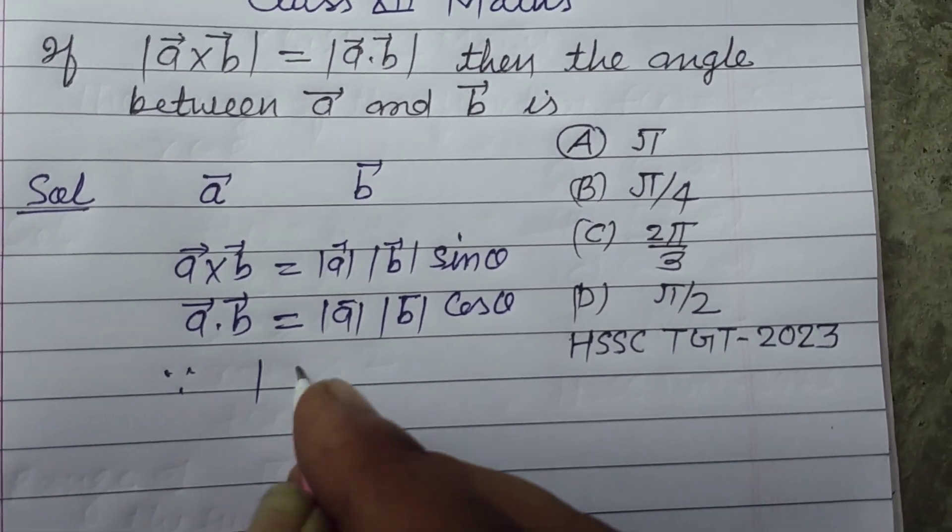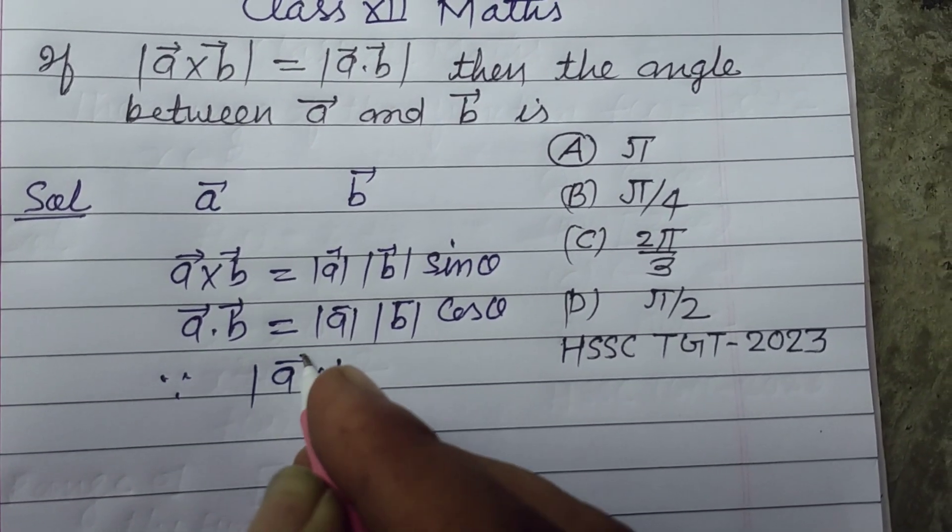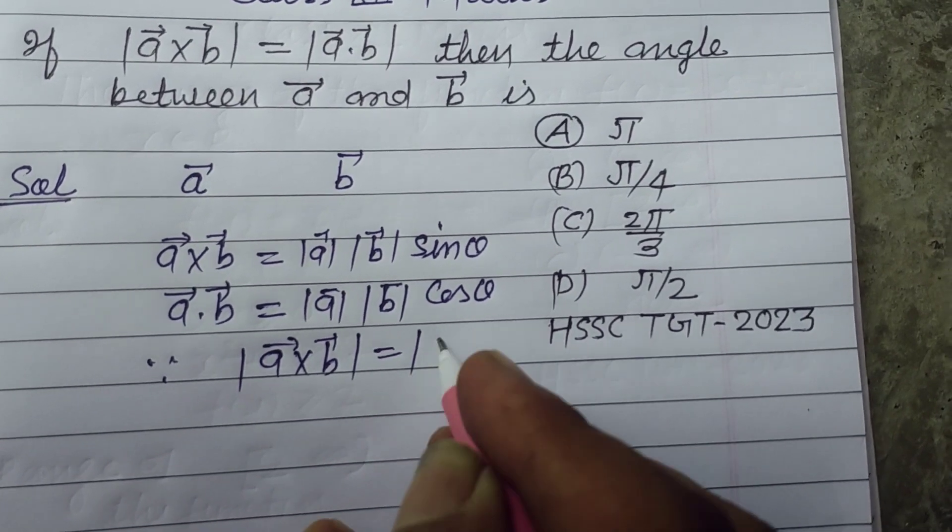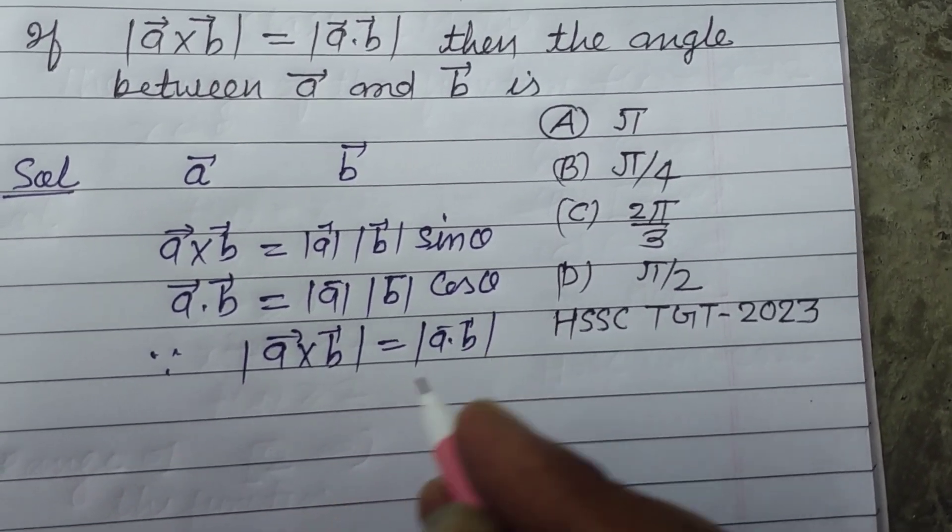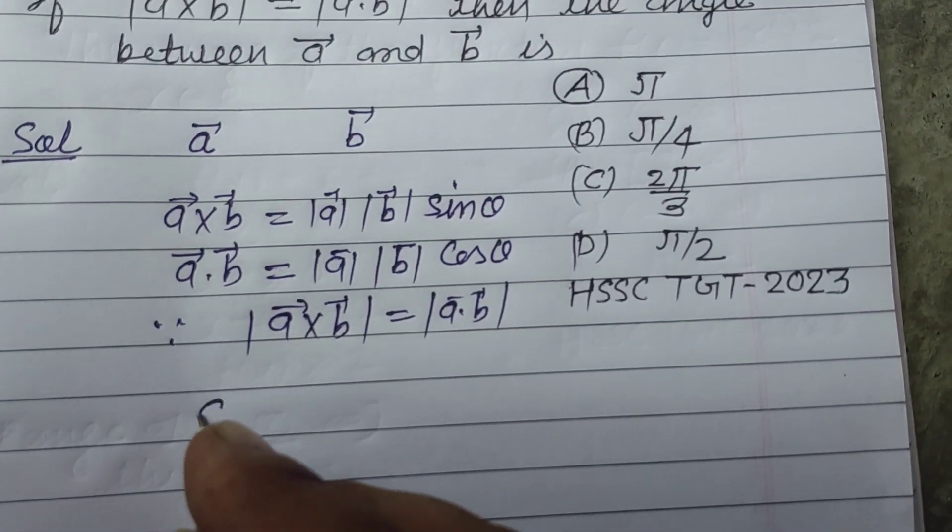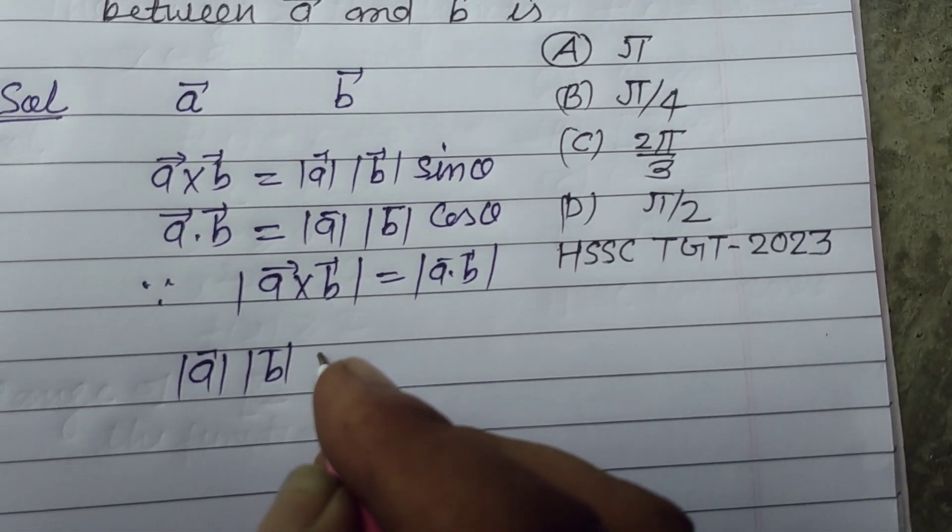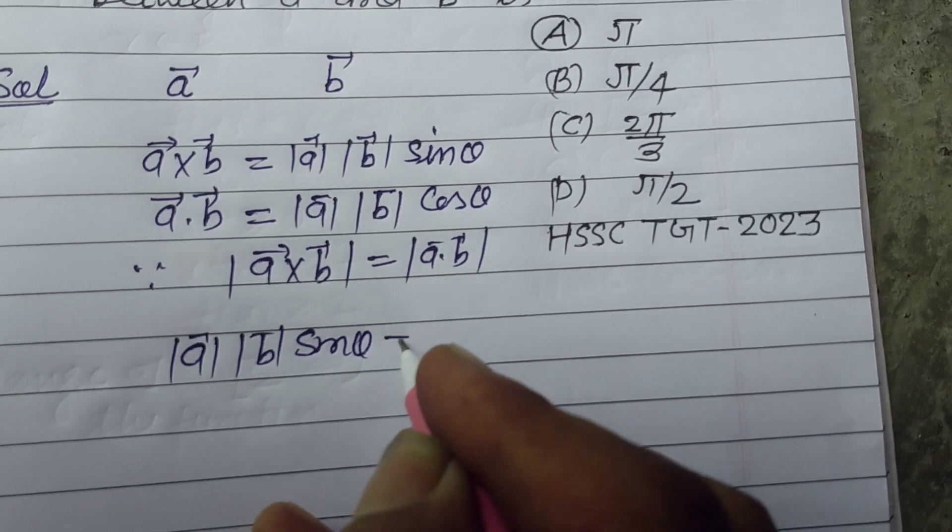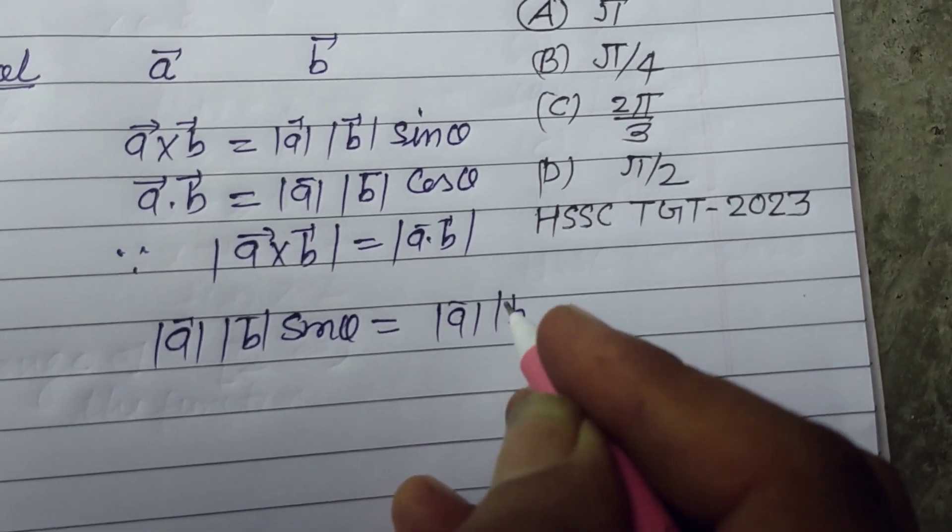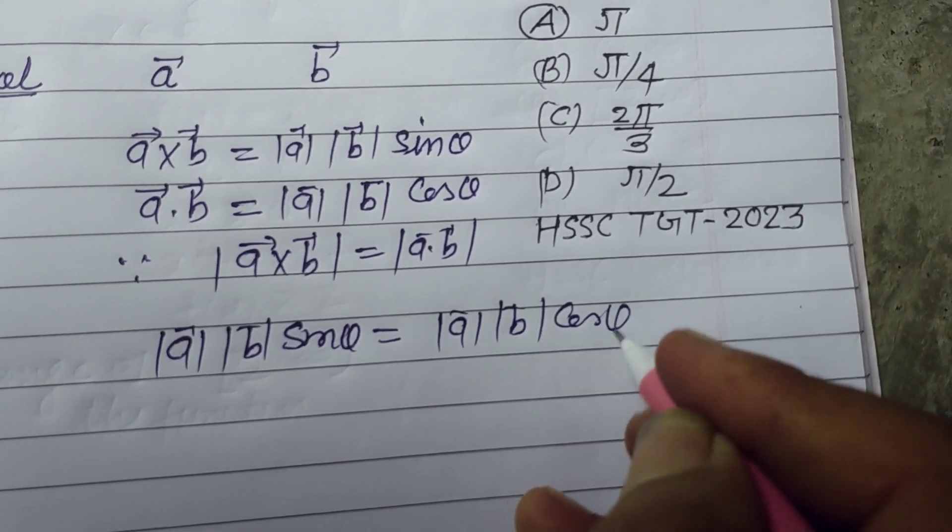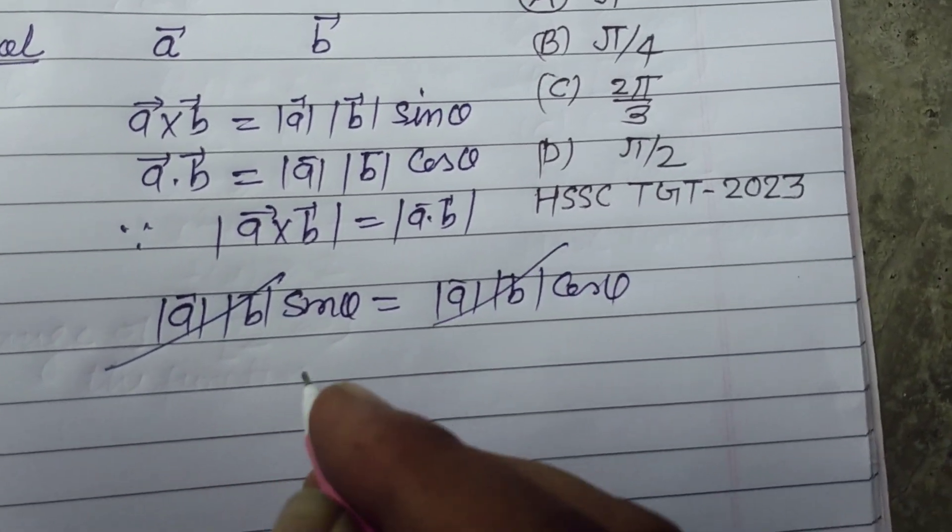Since it is given that magnitude of A cross B equals magnitude of A dot B, so here magnitude of A, magnitude of B, sin theta equals magnitude of A, magnitude of B, cos theta. So these are cancelled out.